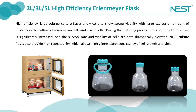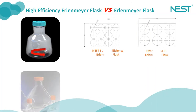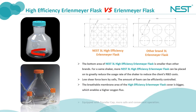Next we'll learn about our high efficiency Erlenmeyer flask. You must have questions about what contributes to the high efficiency. Firstly, it's the bottom area of the shake flask — the area of the Nest 3-liter high efficiency Erlenmeyer flask is smaller compared to that of the 3-liter shake flask from other brands, so more flasks can be placed on the same shaker, reducing the client's R&D cost. Secondly, the appearance efficiently controls the amount of foam to reduce shear force on cells. Lastly, the breathable membrane area of the high efficiency Erlenmeyer flask cover is bigger, enabling a higher oxygen flux and therefore higher density cell culture.